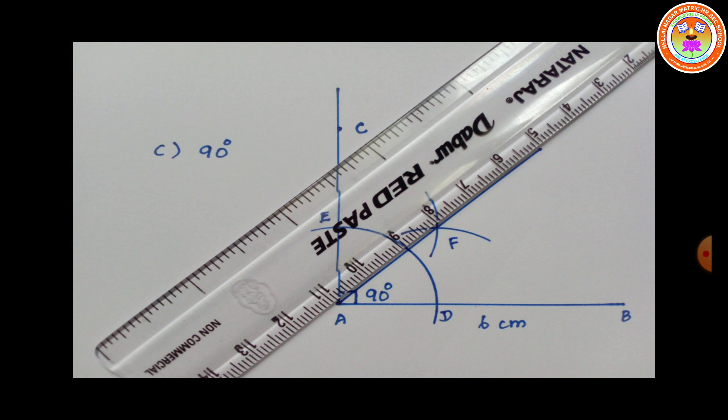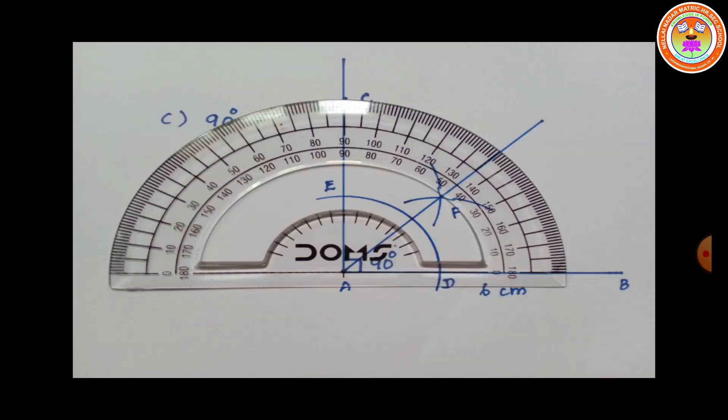Now we are going to measure that angle. Angle FAB equals 45 degrees and angle FAC equals 45 degrees — both angles are equal. Can you see that? Yes.